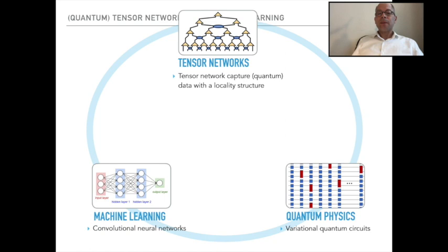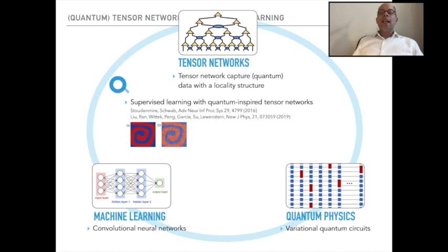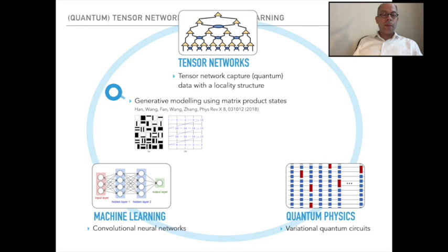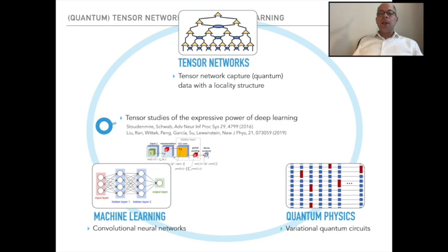There's more than a superficial resemblance with neural networks in machine learning, specifically with deep convolutional neural networks. And while neural networks are not quite tensor networks, the connection is way more than some kind of superficial analogy. It has become clear how one can precisely think of notions of supervised learning with quantum-inspired tensor networks, then of generative modeling using matrix product states — a specifically important class of tensor network states. Tensor networks can also be used as a tool when studying the expressive power of deep learning methods.